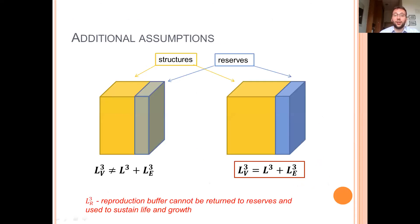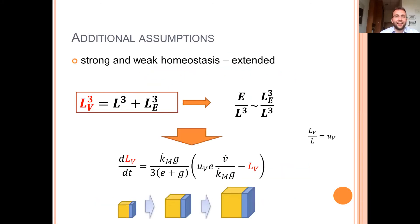We also made some additional assumptions. First is that the volume of an organism is a sum of the volume of structure and volume of reserves. So structures and reserves are separated in space. And according to weak and strong homeostasis, when organisms grow, the increase in structural volume is proportional to the increase in reserves volume.